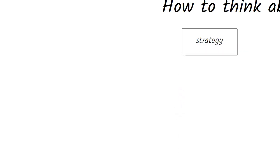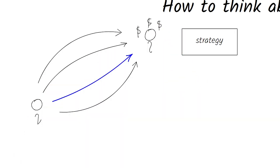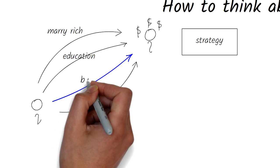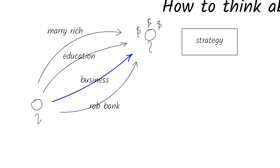I'll use a simple example. Every strategy has at least one goal. A young person's goal might be to be rich. There are many choices to achieve that goal: one may be to marry somebody with money, another maybe to get a good education and a job, another to start a business, and yet another to rob a bank.